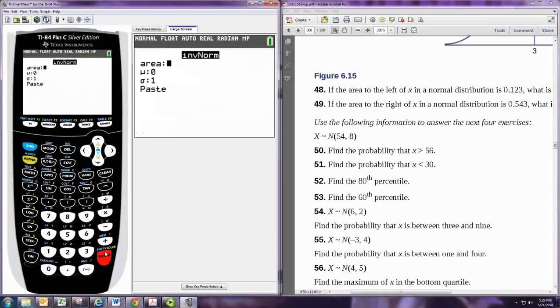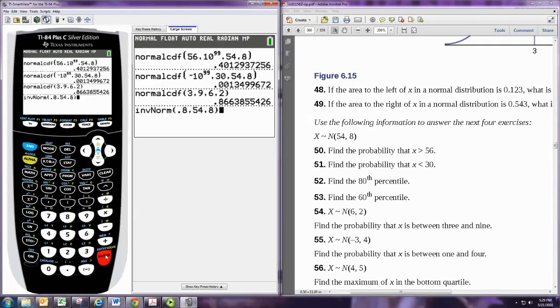then we need to do 2nd VARS and go to the inverse norm. Inverse norm wants an area to the left of a certain random variable value. Of course, the area to the left is the percentage lower than, which is the probability or percentile. So for the 80th percentile, the area is 0.8. The mean is, in this case, 54, and the standard deviation is 8. So put the mean and standard deviation that are given. Then paste in, and that will find the 80th percentile.